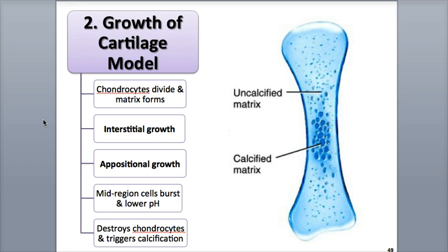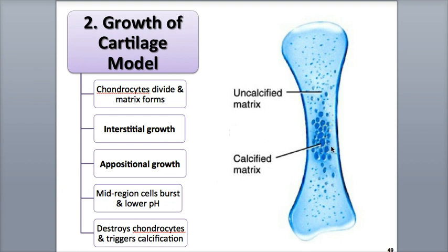In the second stage, growth of the cartilage model, the chondroblasts surround themselves in the extracellular matrix they are producing and become chondrocytes, or cartilage cells. The chondrocytes divide and grow the cartilage model lengthwise in a process called interstitial growth, also known as endogenous growth, meaning growth from within. As new extracellular matrix is deposited on its surface, the cartilage model can grow in thickness through appositional growth, or exogenous growth. As the model grows, chondrocytes in the middle undergo hypertrophy, an increase in size, and the nearby matrix begins to harden through calcification.